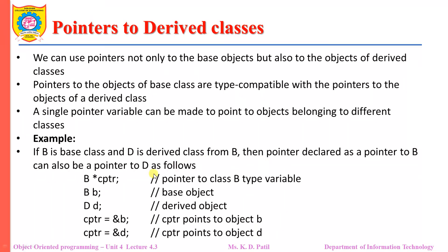Here I have a CPTR which is a pointer variable of type B. Here the object of class B is created and here the object of class D is created. Now CPTR can point to the object of class B as well as to the object of class D.